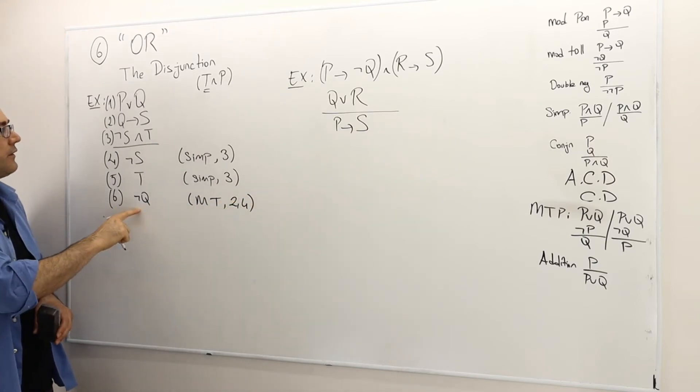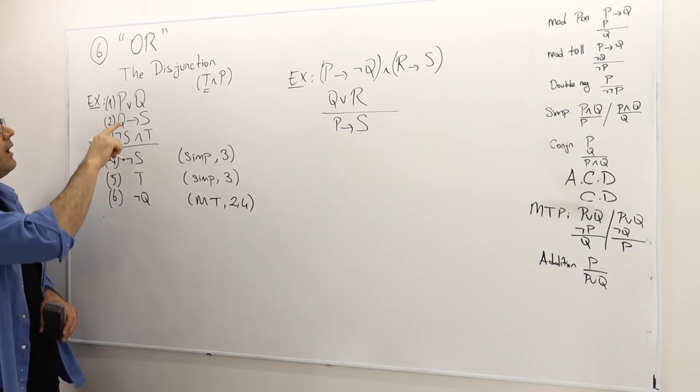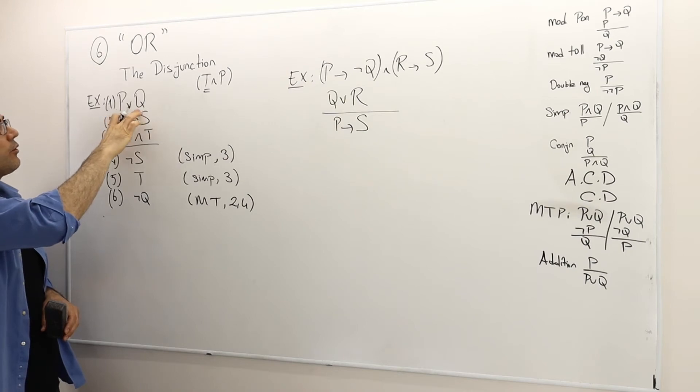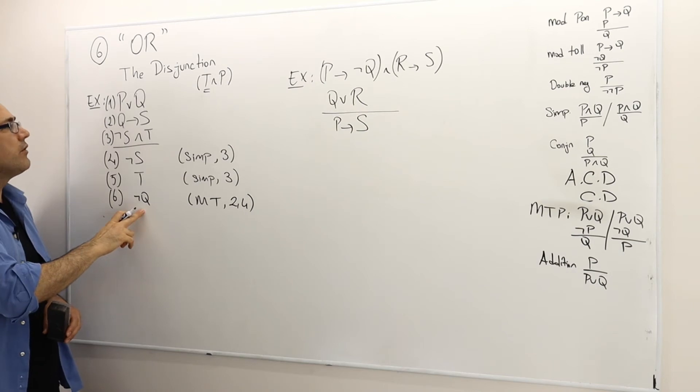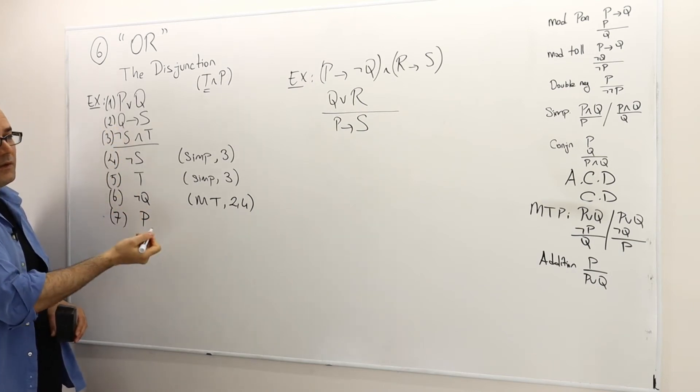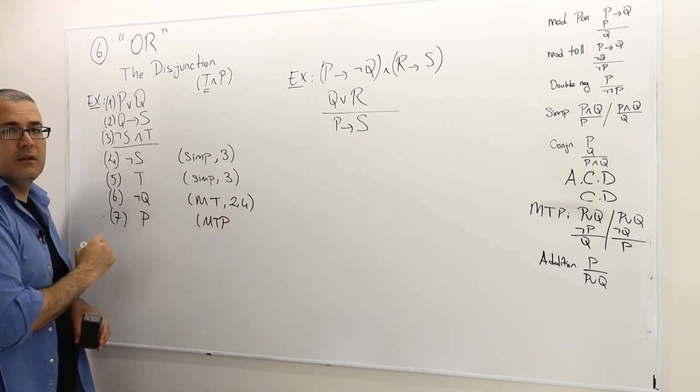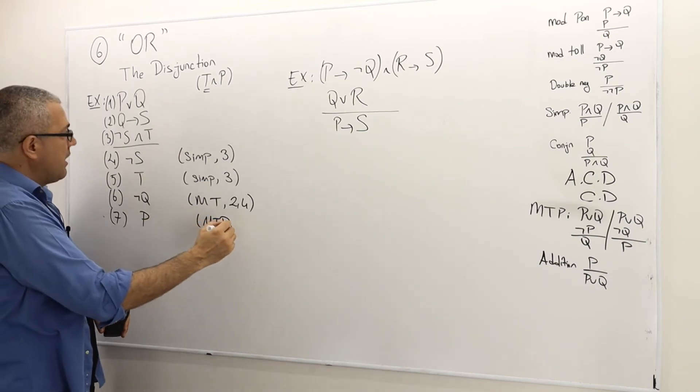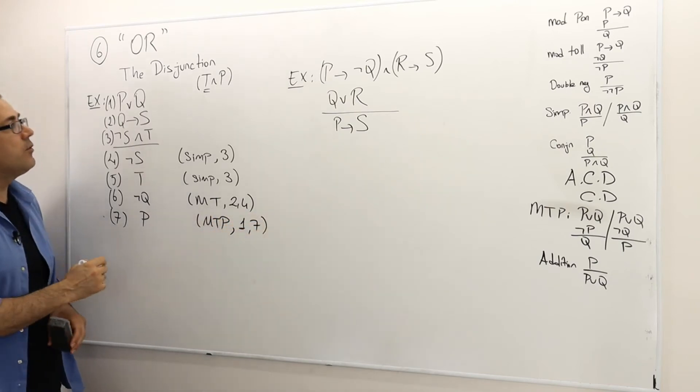I got not Q very well. What else? So now I can use this disjunction P or Q is true. Not Q is true, meaning Q is false. So therefore P must be true. This is MTP, modus tollens ponens, between the arguments one and seven. Very well.